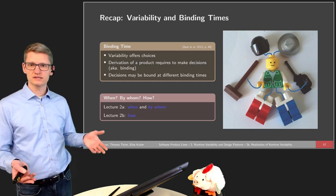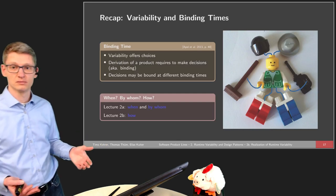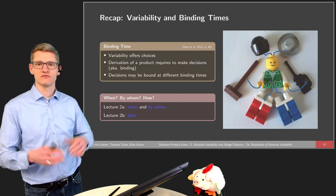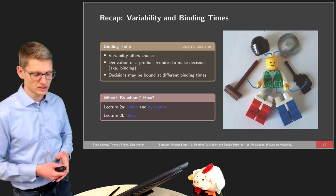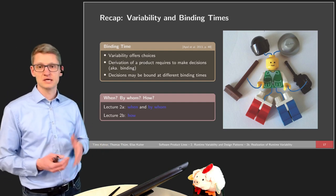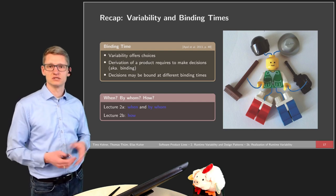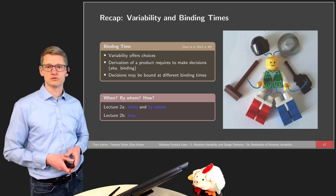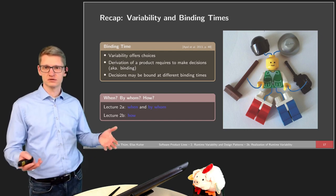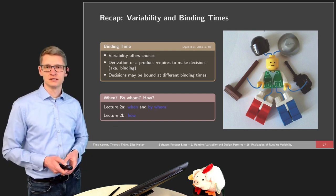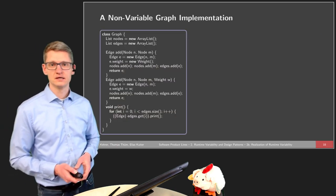This is related to binding times. In the first part of the video, we talked already about binding times. The variability offers us choices and the duration of a product requires making decisions at a certain point in time. Decisions may be bound at different binding times. The question is: when does it happen, and by whom? We looked at different techniques already in the first part of the lecture, and the question is how this is realized in source code.